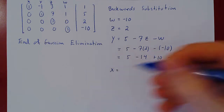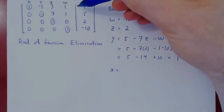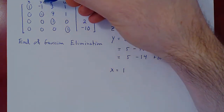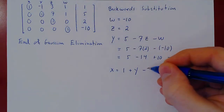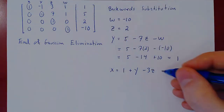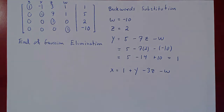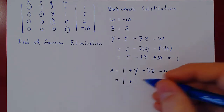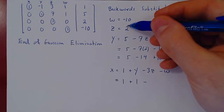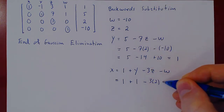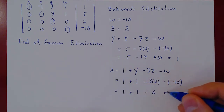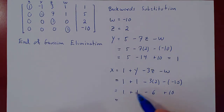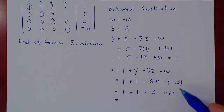Finally we can solve for x moving up one more row. X equals one; a negative y will become a positive y on the other side; a positive three z becomes a negative three z; and a positive w becomes a negative w. We can now replace, as we know the values of y, z, and w: one plus y — which is also one — minus three times z — minus three times two — minus w, which is negative ten. So we get one plus one minus six plus ten. One plus one is two, minus six is negative four, plus ten: positive six.